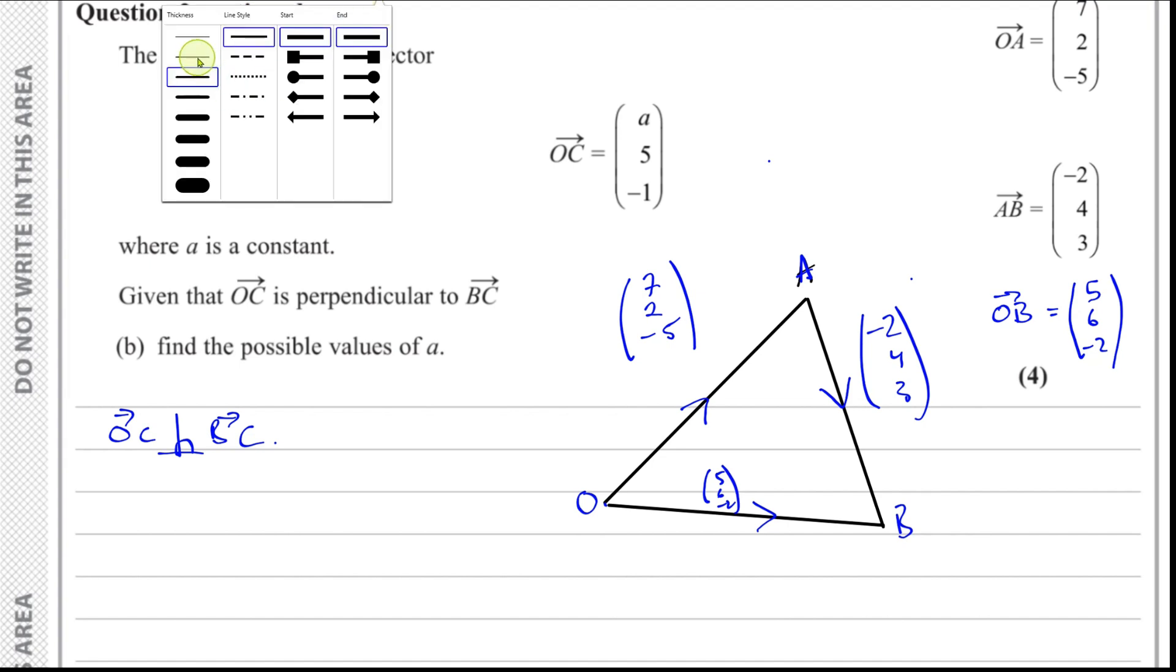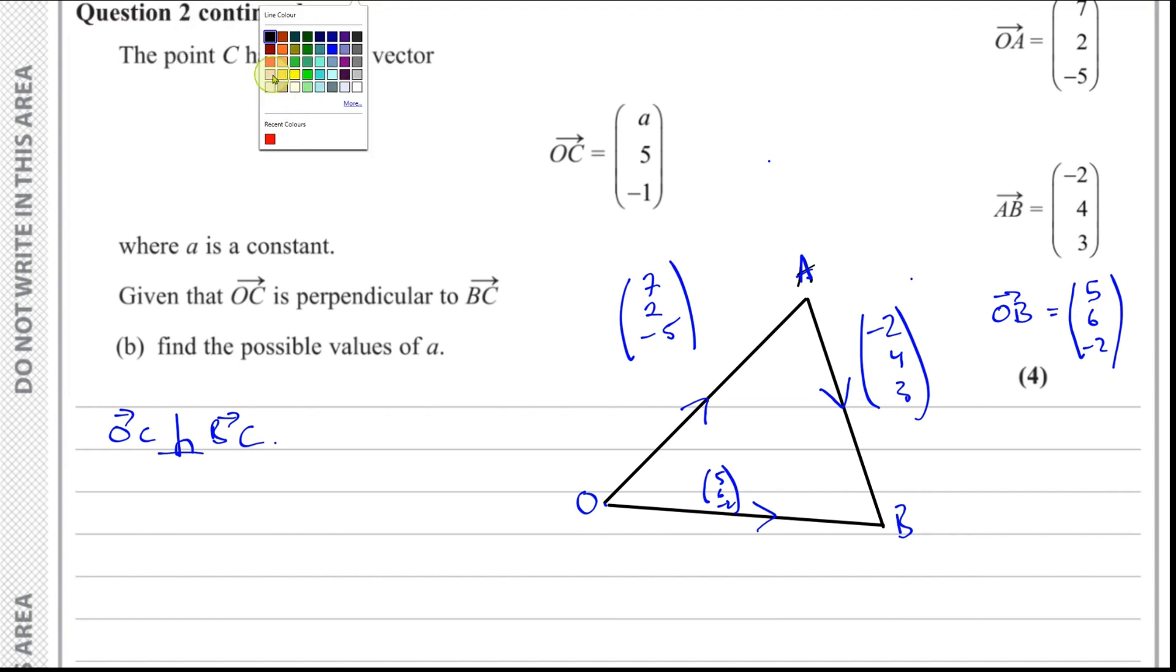I'm going to draw a line in a different color. So OC is going to be somewhere, it could be anywhere like this. And there could be another version of something like this, where this line BC is perpendicular to OC. They meet at right angles. So that's C. Let's call it C1 and C2, possible values of C. Kind of like a kite shape it makes.